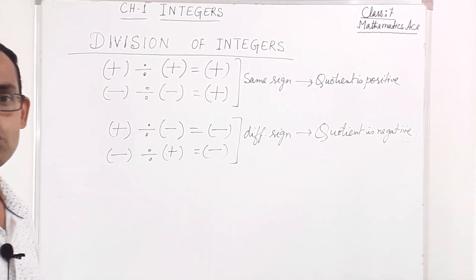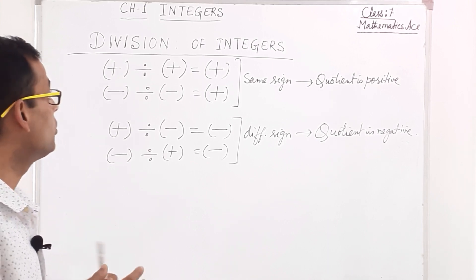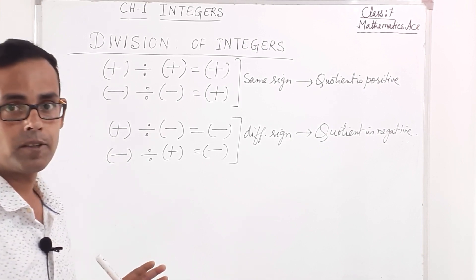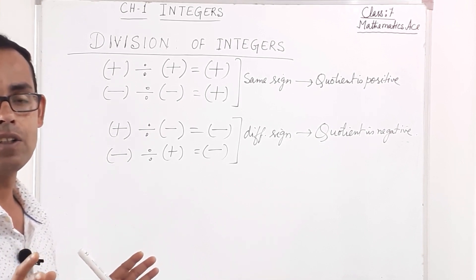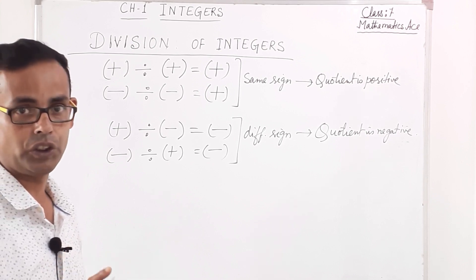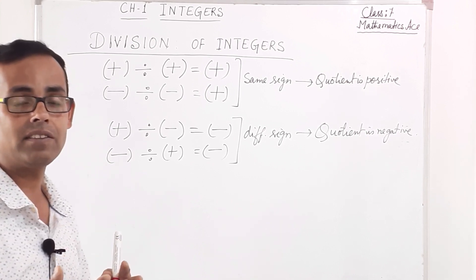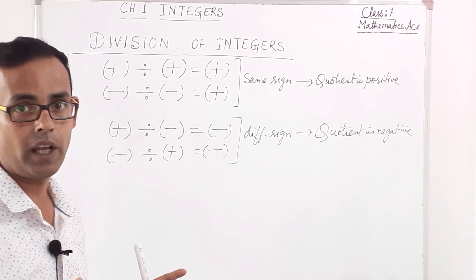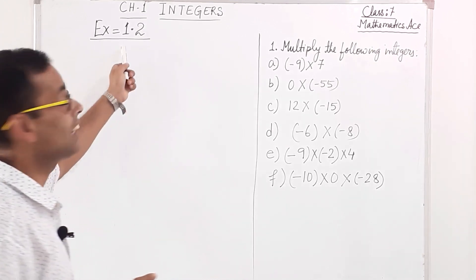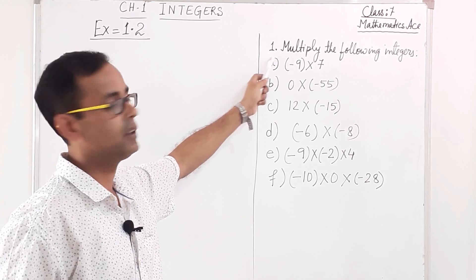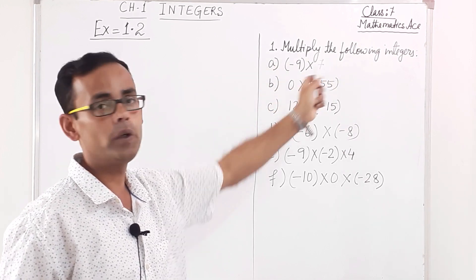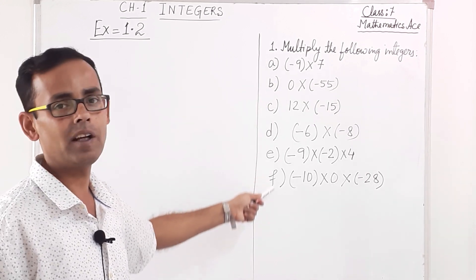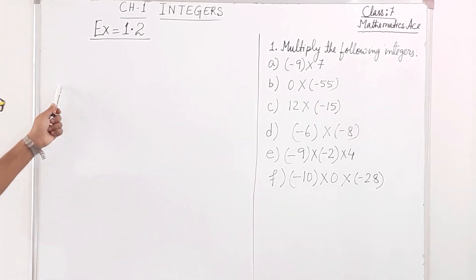These rules are very important when we are doing the multiplication and division sums of integers. Now we will start solving the exercise questions. When we solve the exercise questions, this concept will become much more clear. Let us start solving exercise 1.2, question 1: multiply the following integers. There are sums a to f, and we will take them one by one.